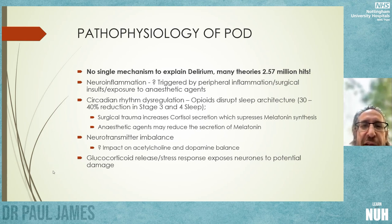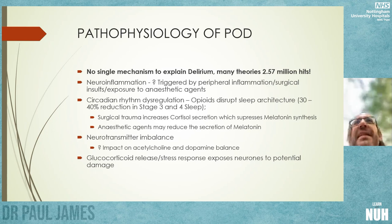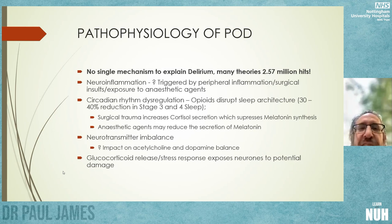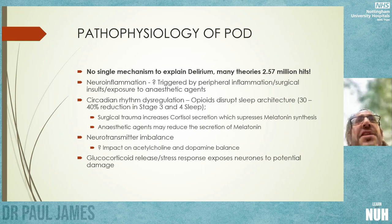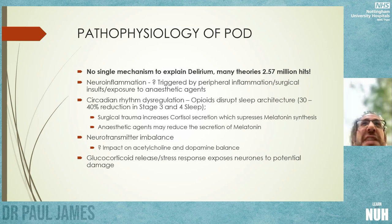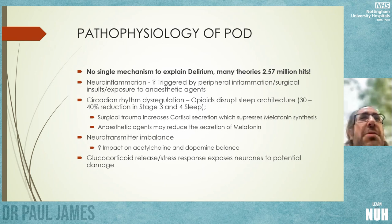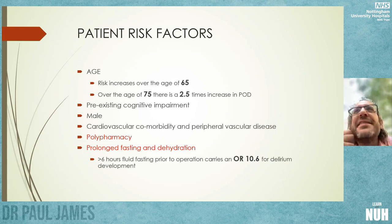There may also be a neurotransmitter imbalance — an impact on the acetylcholine and dopamine balance — that may be triggered or affected by the anaesthetic agents we use. We know there is a glucocorticoid stress response release associated with any surgical insult, and that might expose cerebral neurons to potential damage, making them less effective and leading to more neurochemical imbalance, which leads to delirium.